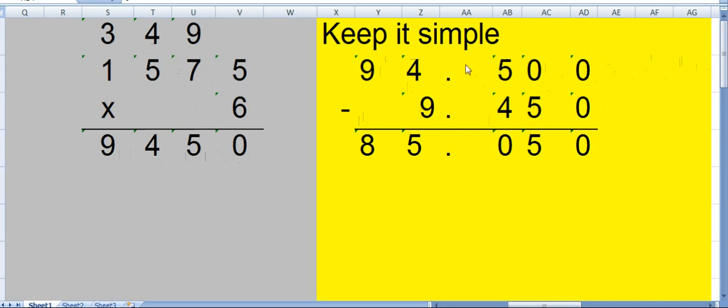We want the difference. So 0, 10 minus 5 is 5. Then this becomes 4, 0. This 14 minus 9 is 5. Then again this becomes 8, 85.05.